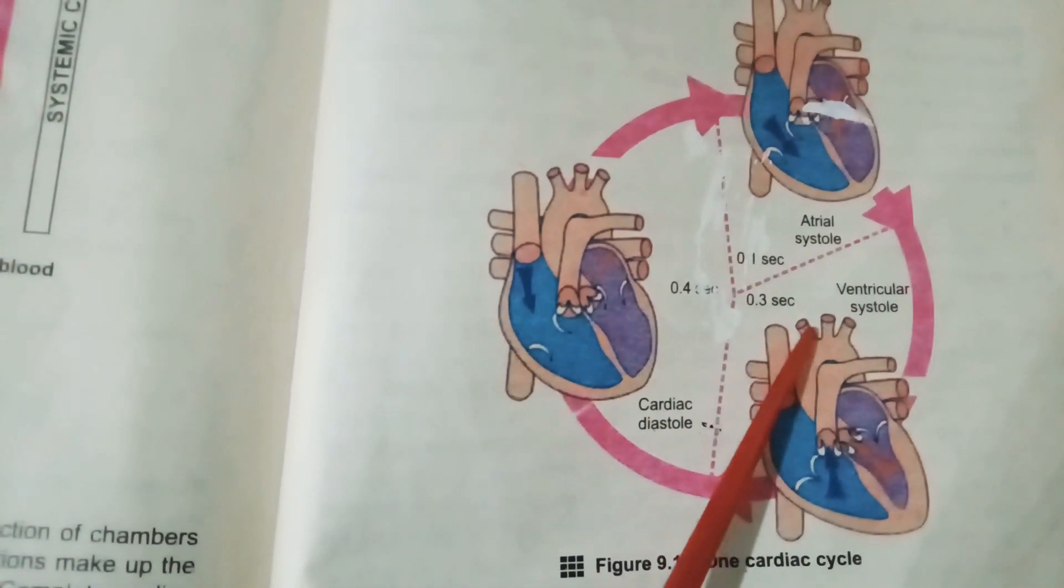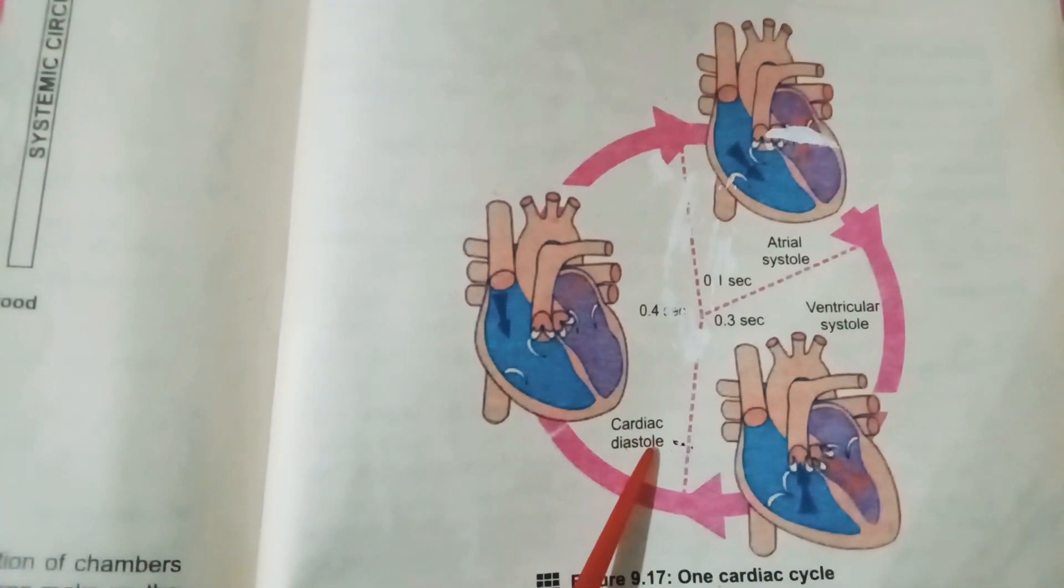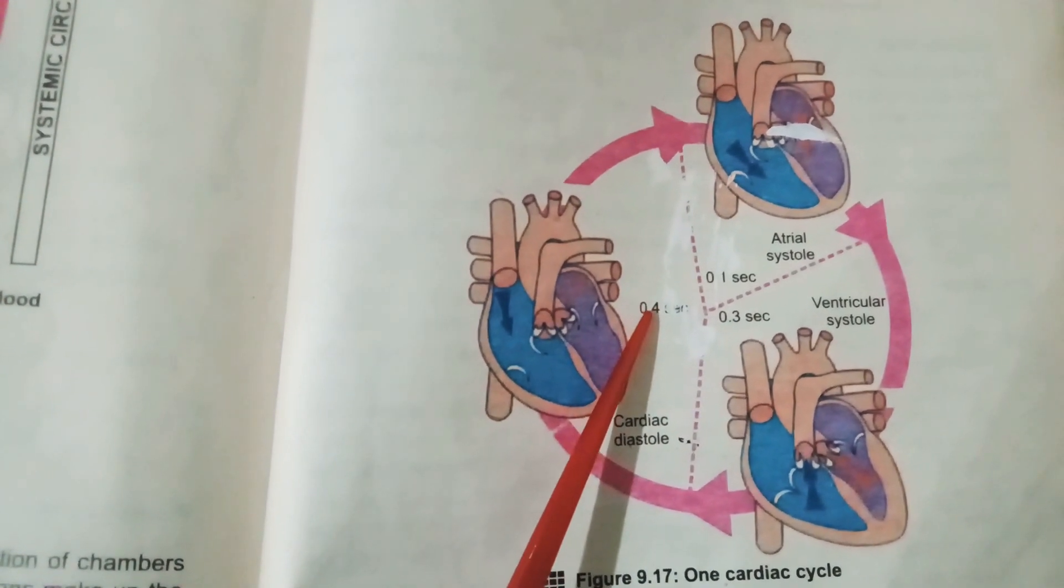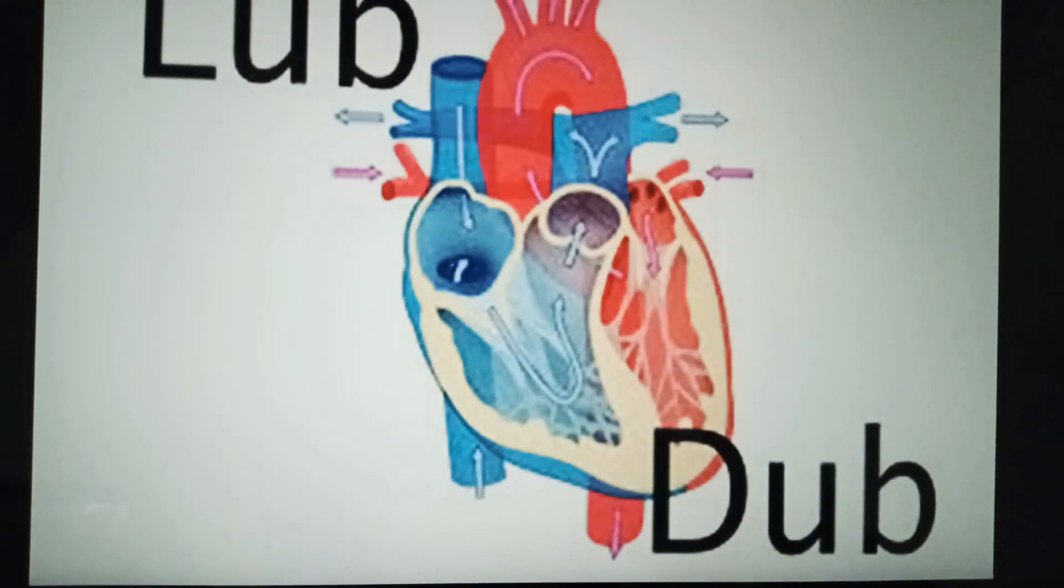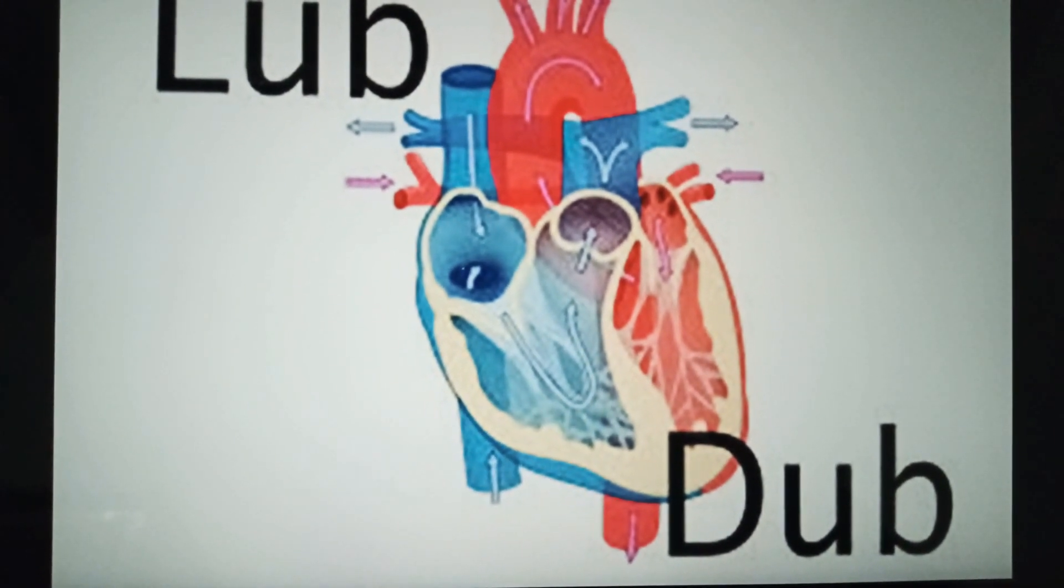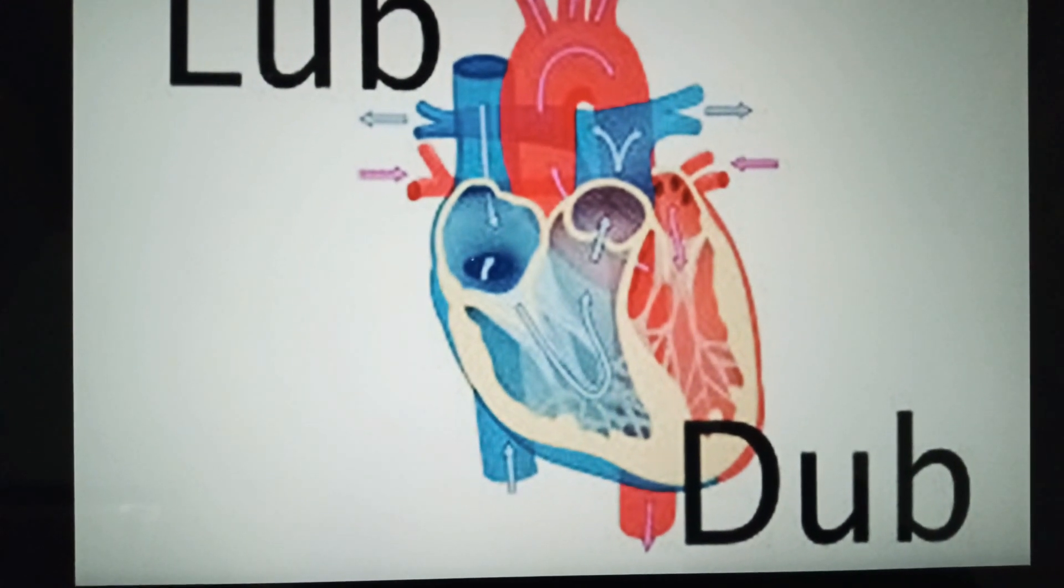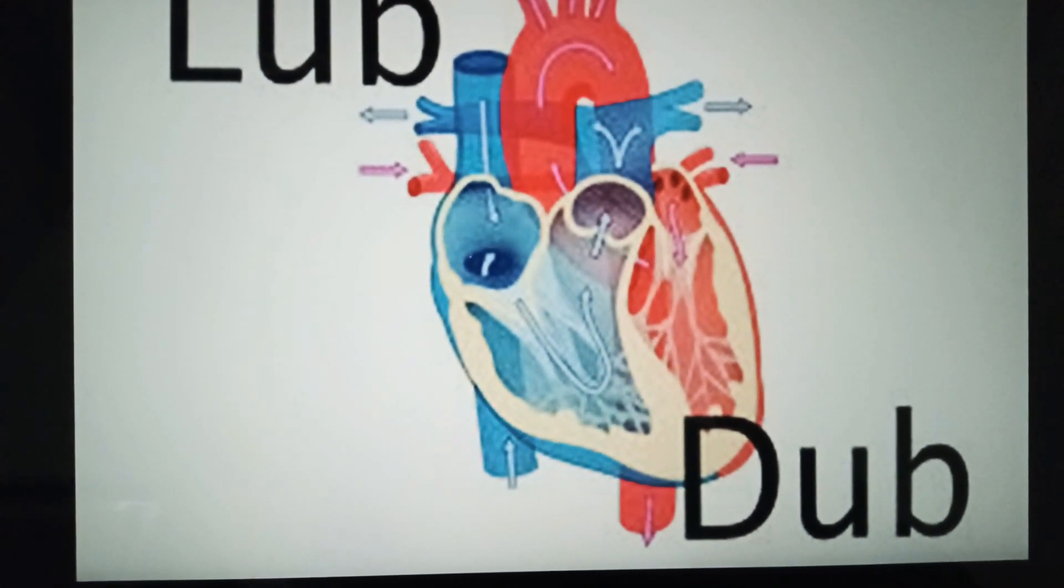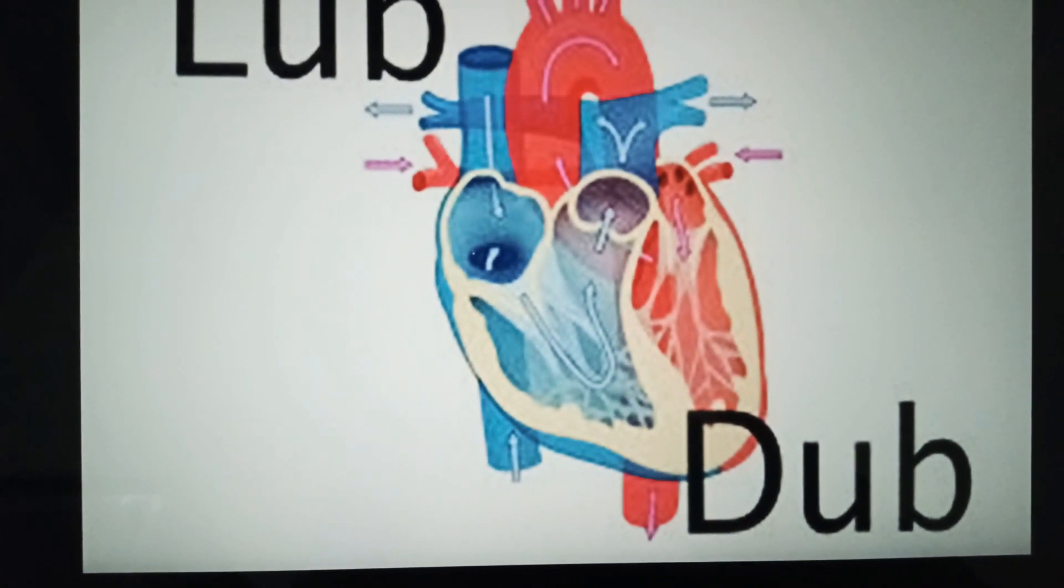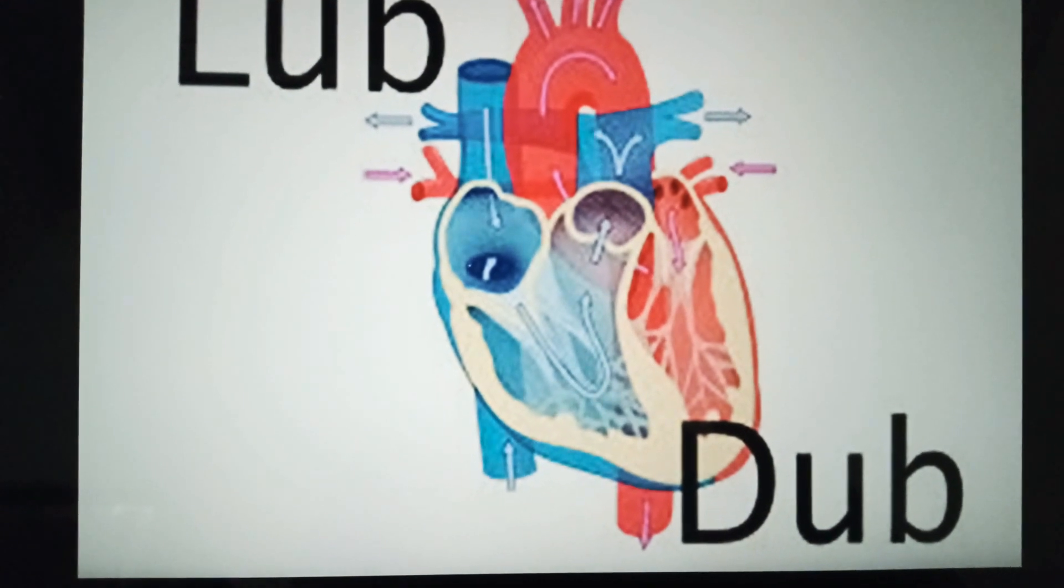When ventricles contract, tricuspid valve and bicuspid valves close and a lub sound is produced. Similarly, when ventricles relax, the semilunar valves close and a dub sound is produced. Lub-dub can be heard with the help of a stethoscope.